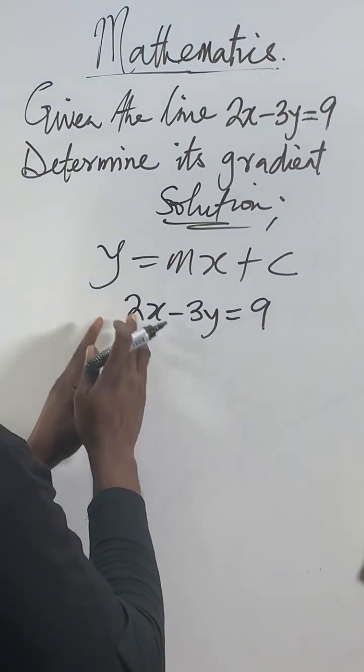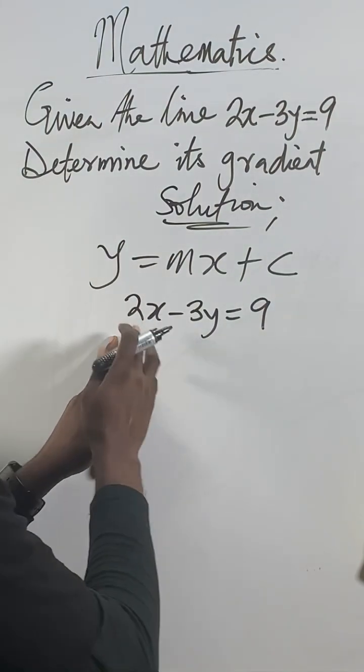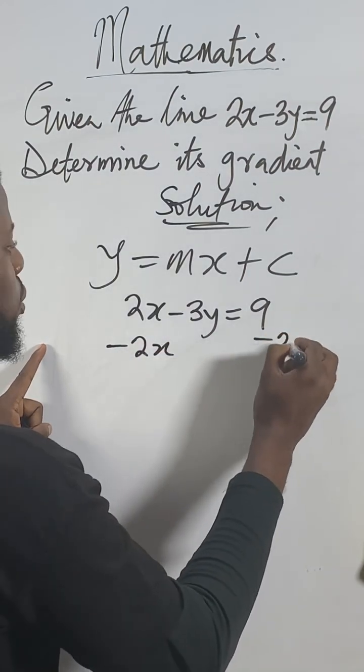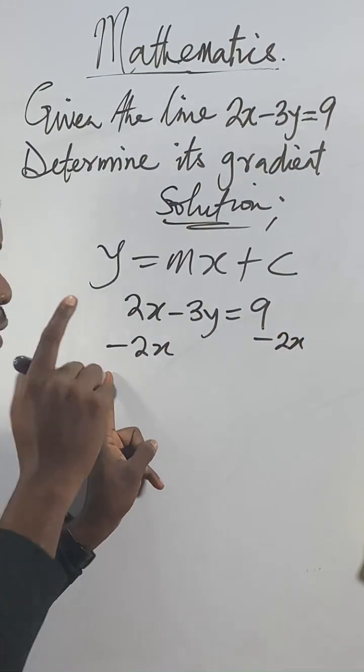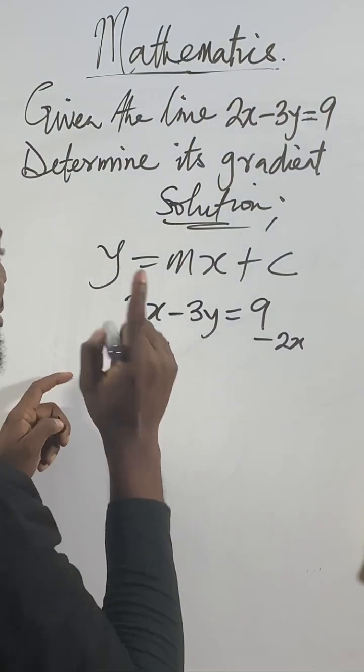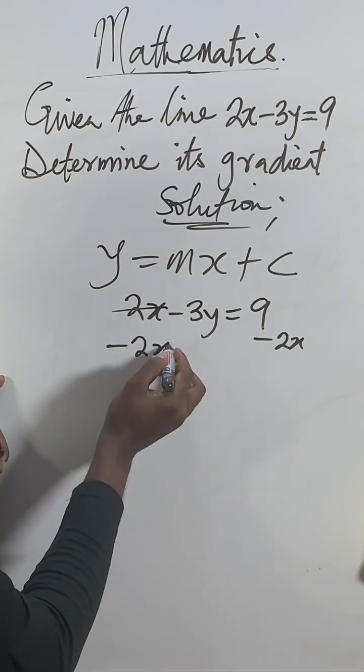The only thing I will do now to make sure 2x comes out is subtract 2x from both sides of the equation. Before you do that in video, let's say carry 2x across this side. This one and this one will cancel.